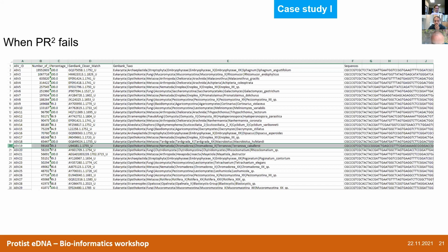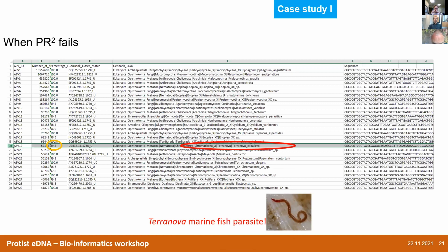The closest match from PR2 is Terranova caballeroi, which is a nematode — a marine fish parasite closely related to Anisakis. You may have heard of Anisakis — when you buy fish to make sushi and cut the salmon or tuna, sometimes you find small living worms trying to escape. Those are Anisakis, and Terranova is related to those. You would not expect that in a peat bog — there are no big fish in the peat bog. So let's use BLAST.